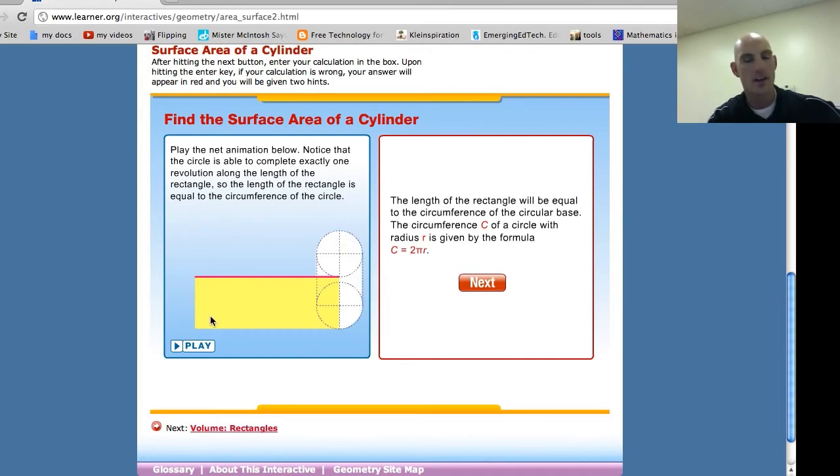So we have a circle on the top, a circle on the bottom, and a rectangle that goes around the outsides, just like the net diagram. Alright, and so when I find the area of this.